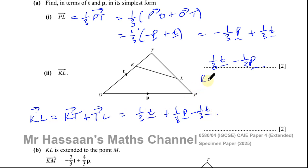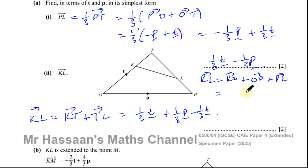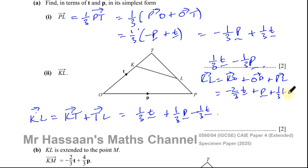We could also go the other way: K to L is equal to K to O plus O to P plus P to L. Some people might find this easier because K to O is minus two thirds t, and O to P is just p, and P to L is the answer from before, which is one third t minus one third p.